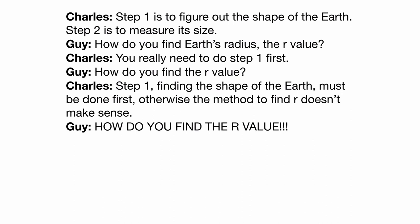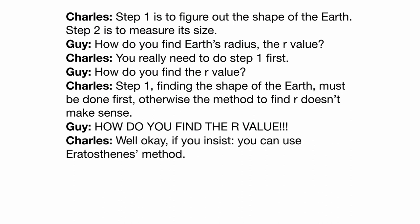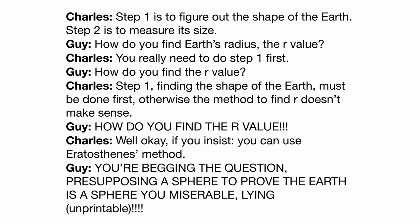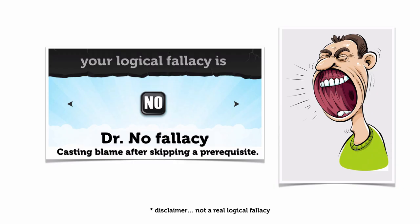"How do you find the R value?" Well, okay, if you insist — you can use the Eratosthenes method. "You're begging the question, presupposing a sphere to prove the Earth is a sphere, you miserable lying snuffleupagus." Well, well, Mr. Mann, you have executed a textbook example of the Dr. No Fallacy — casting blame after skipping a prerequisite.